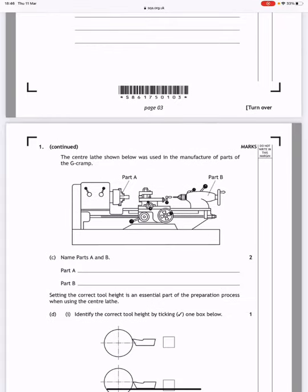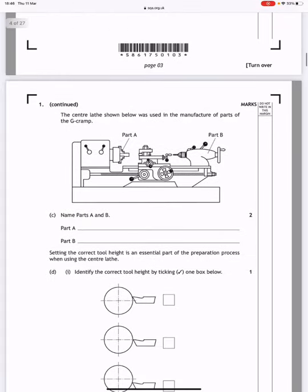The centre lathe shown below was used in the manufacture of parts of the g-cramp. Name parts A and B: the three jaw chuck and the tail stock.